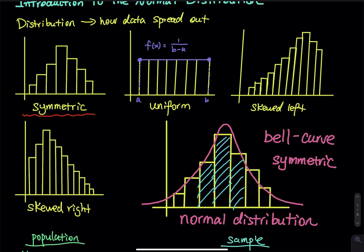Let's say you take a test in a class and your instructor says the mean of this test equals 80. The mean equals 80 means that in the whole class, most people score around 80 points. The mean equals 80 means most people score around 80 points.